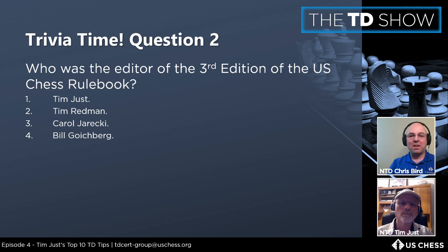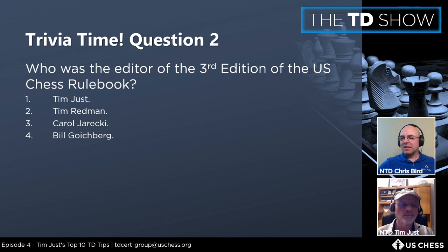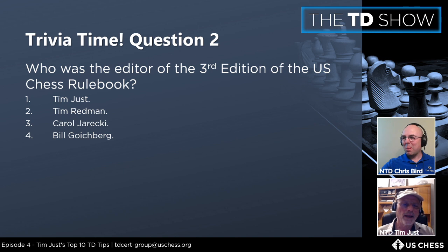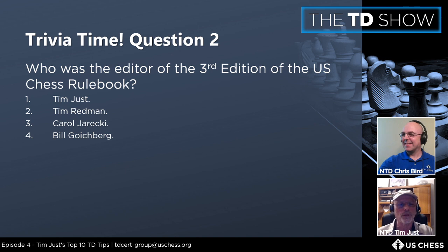Question two: who was the editor of the third edition of the US Chess rulebook? Options: 1) Tim Just, 2) Tim Redmond, 3) Carol Jurecki, or 4) Bill Goichberg. The chat showed strong consensus for number two. The correct answer is Tim Redmond. He was Tim Just's mentor when Tim was starting work on the fifth edition — he explained how negotiations work and what's expected of an editor.